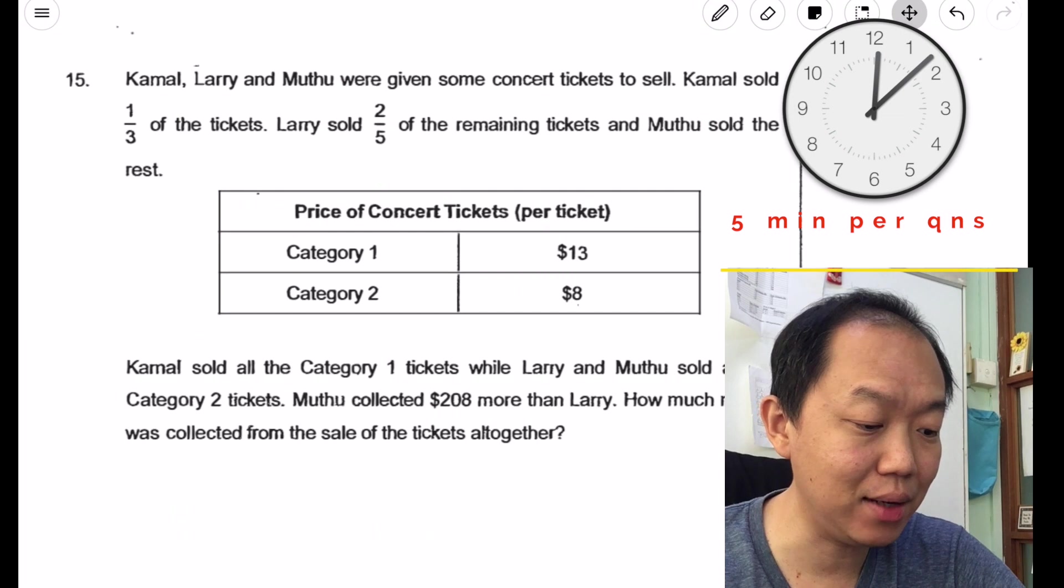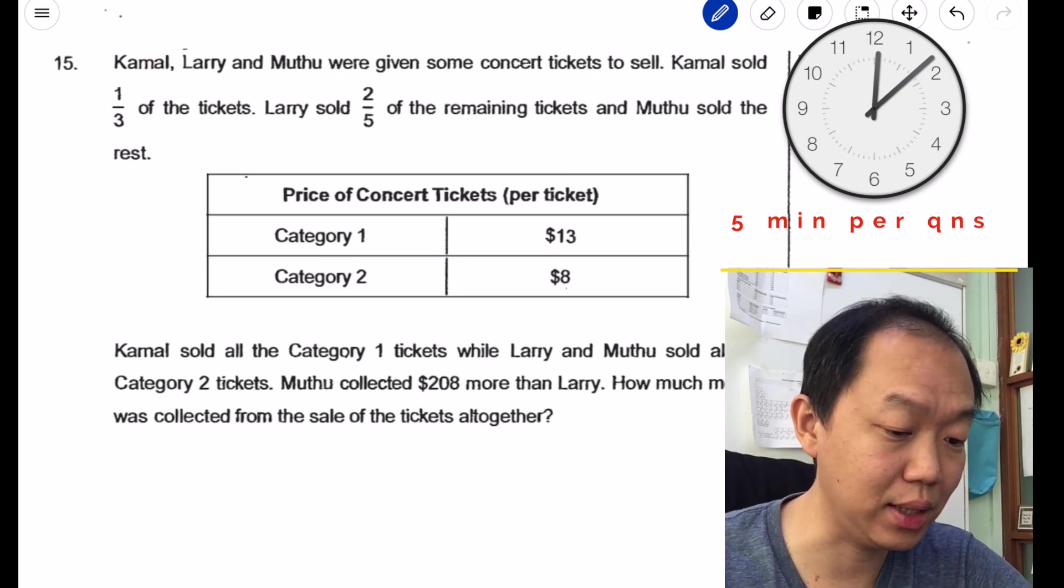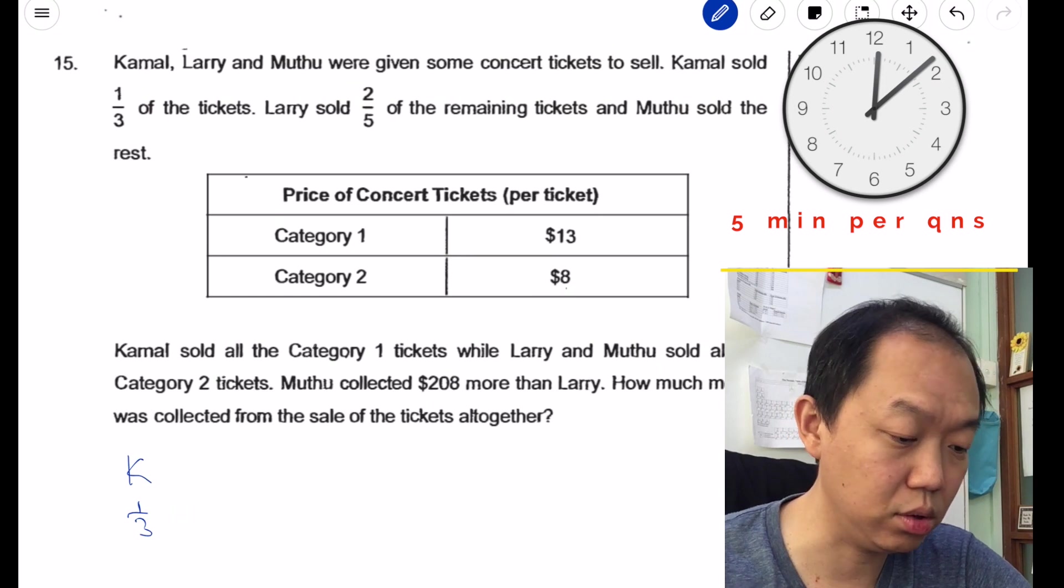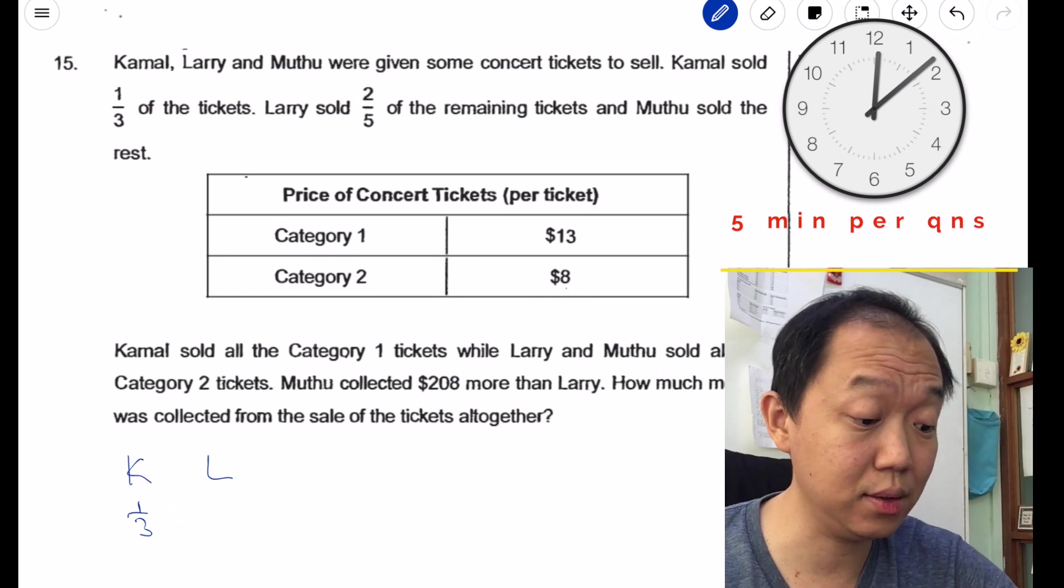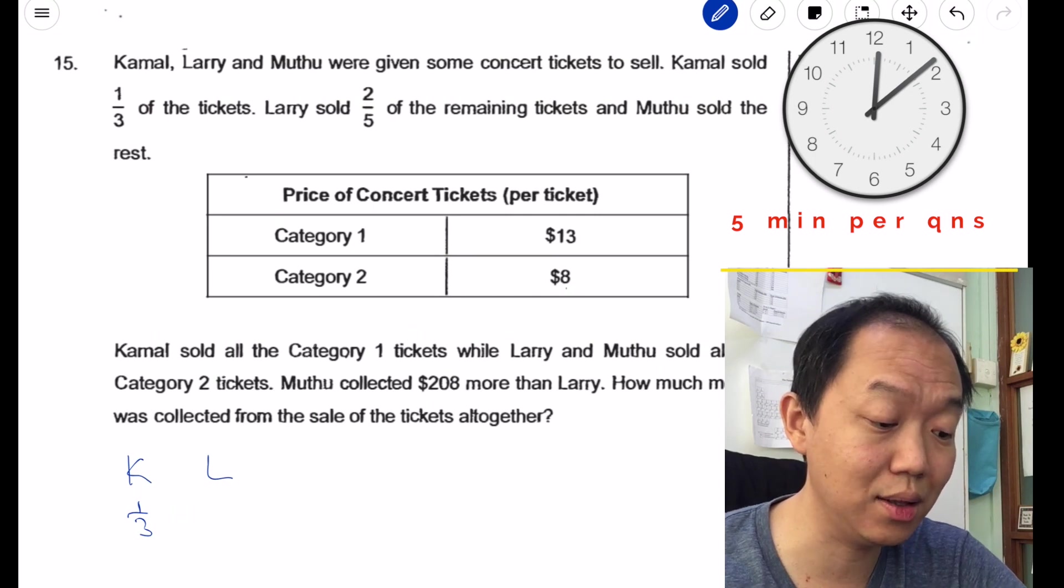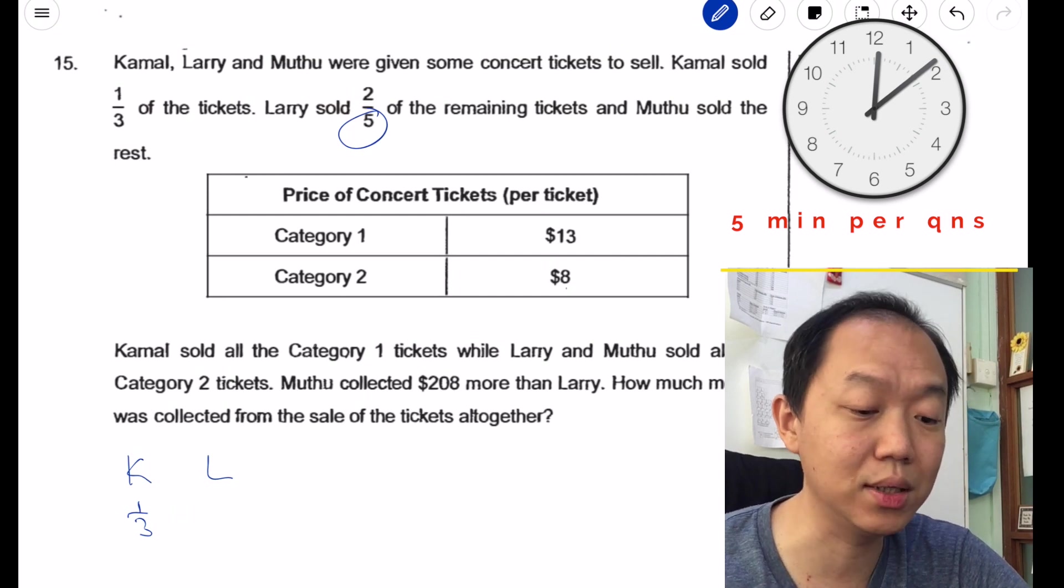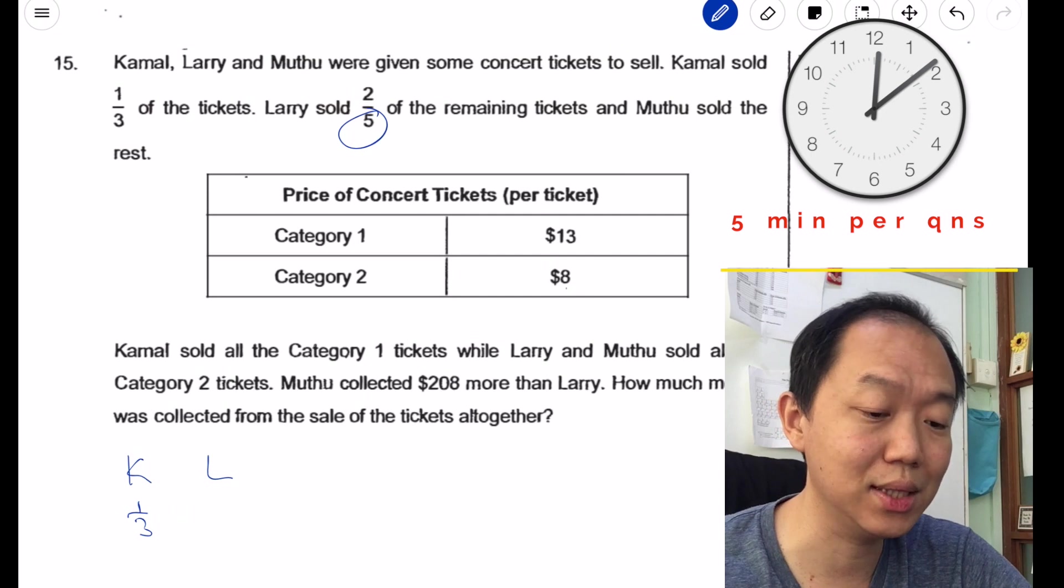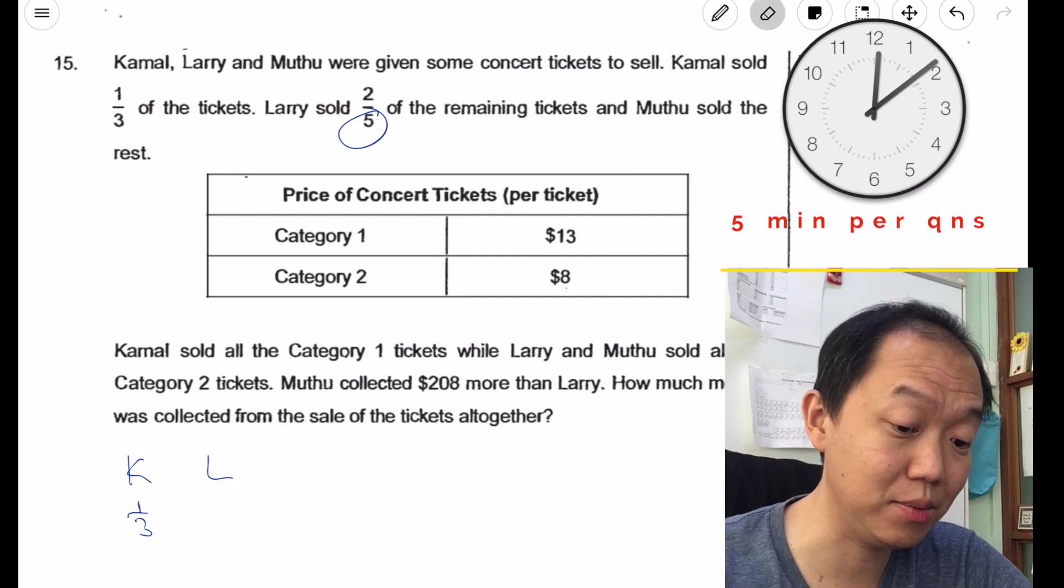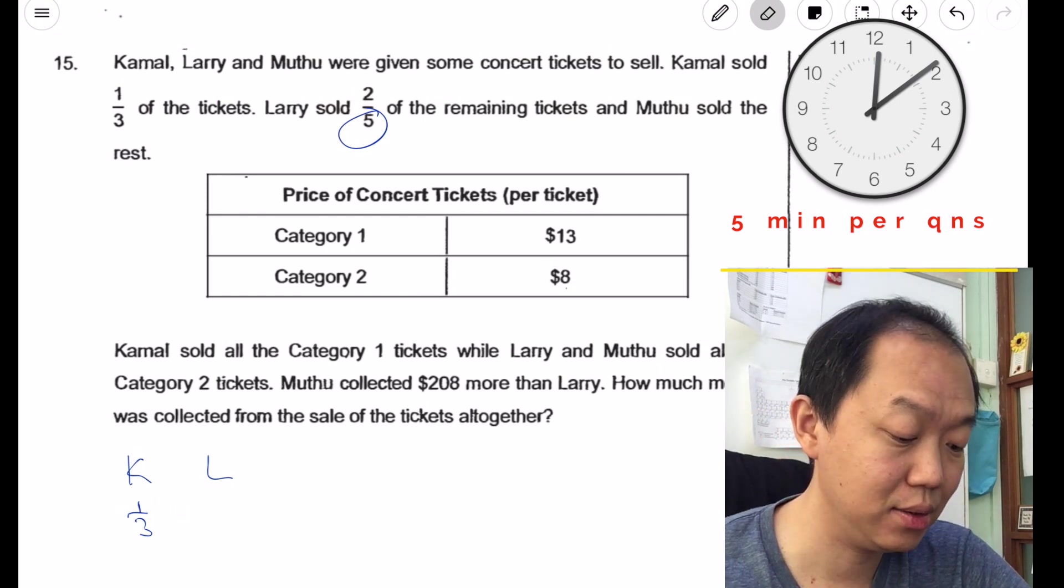Next. Kamal, Larry and Mutu are given some concert tickets to sell. Kamal sold one third of the tickets. Always within the first line, I would try to draw some kind of diagram. So Kamal sold one third, one out of three. Larry sold two fifths of the remaining, so L and Mutu sold the rest. If one third is sold by Kamal, there is two thirds left. So the remainder is two thirds. Larry sold two fifths, now this five is referring to the remainder, but over here I have a remainder of two. So I want to make two and five the same. What I do is multiply, try to find a common multiple, which in this case is 10.